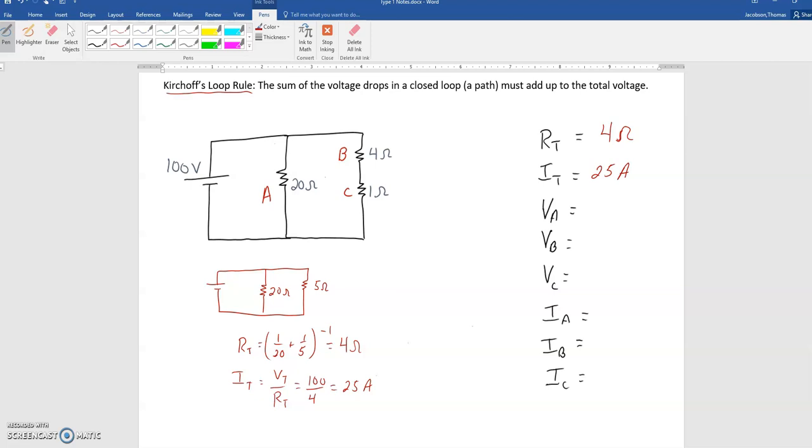and we should know that since A is in the only path this way, that loop, that A is going to get all 100 volts. So I can go ahead and say that A gets 100 volts.